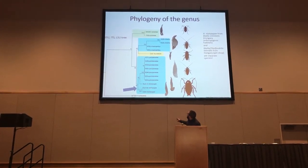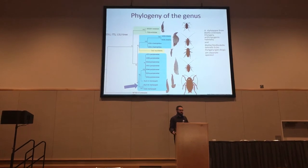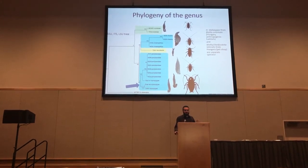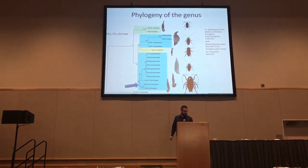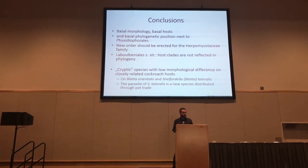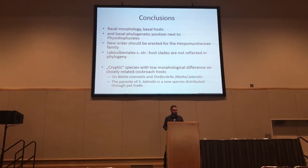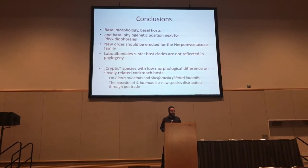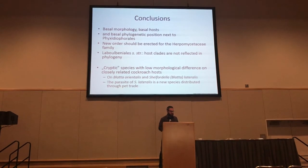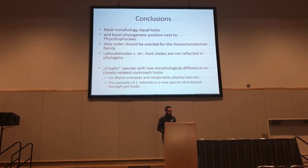Furthermore, if you look at this tree, the different colors represent different families of cockroaches as hosts, and it is also apparent that there is no strict co-phylogenesis between the parasite and the host at the family level of the insect hosts. We can conclude that the genus Herpomyces shows a basal, primitive morphology; it has the basal-most hosts among the class if we do not consider the Pyxidiophorales; and genetically it has a basal phylogenetic position next to the Pyxidiophorales, so it should be elevated to the level of a new order. The Laboulbeniales sensu stricto were shown to have no strict co-phylogenesis — the host clades are not reflected in their phylogeny.